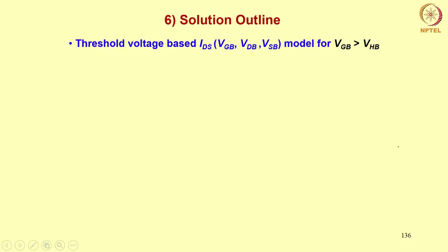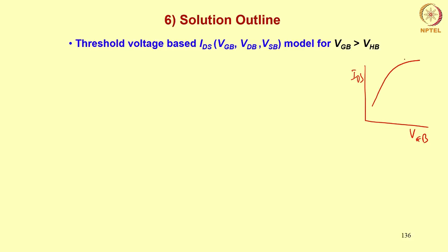In this lecture, let us derive the model for strong inversion, that is Vgb greater than Vhb. This is your Ids versus Vgb in a semi-log plot, and this is Vhb. We are talking about the strong inversion region — that is where we want to derive this current. This is on a log scale.